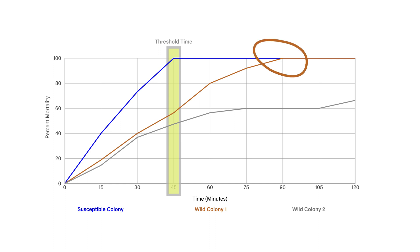In wild population 1, they die soon after the threshold time. This means that the resistance mechanism is weak. In wild population 2, some mosquitoes never died in the two-hour period. This means that the survivors have a strong resistance mechanism.